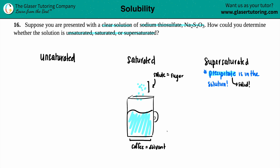Now, in this case, they said we are presented with a clear solution. A clear solution means everything is one uniform color — it's all clear. So we assume there are no solids in the solution, no white precipitate. Right off the bat, if you're shown a clear solution, there are no solids, and we can automatically state that the solution is not supersaturated. Supersaturation has to have some type of precipitate in it.